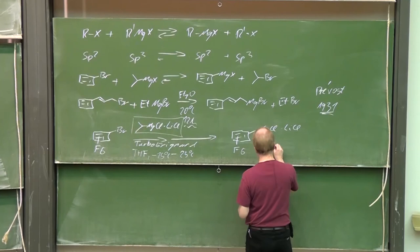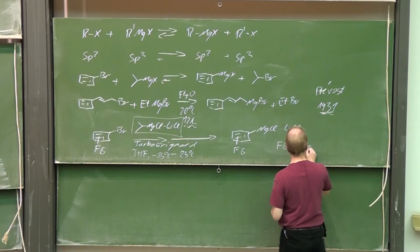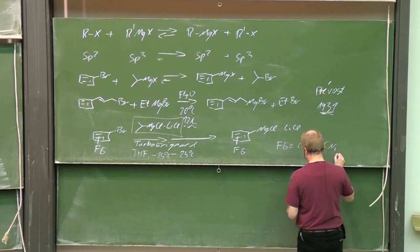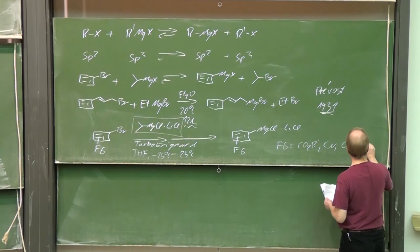Reaction is done in THF most of the time between minus 15 to 25 degrees. With this result, functional groups are tolerated, for instance esters, cyano groups, alkoxy groups, other halides.